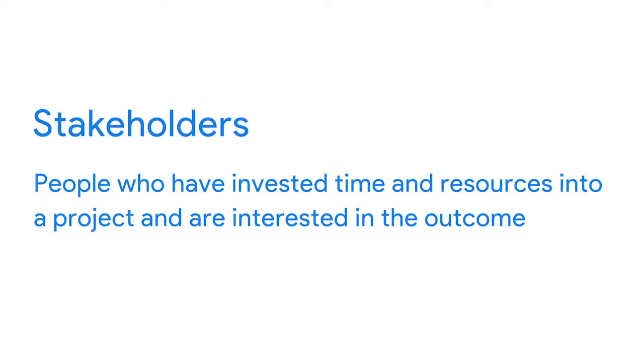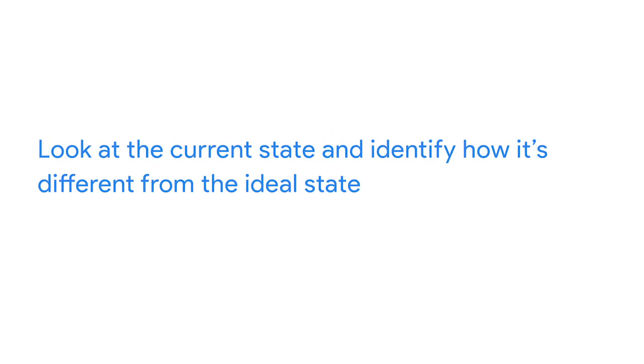Stakeholders hold a stake in the project — they are people who have invested time and resources into a project and are interested in the outcome. Defining a problem means you look at the current state and identify how it's different from the ideal state. Usually, there's an obstacle we need to get rid of or something wrong that needs to be fixed. For instance, a sports arena might want to reduce the time fans spend waiting in the ticket line. Another important part of the Ask phase is understanding stakeholder expectations.